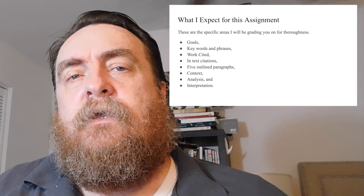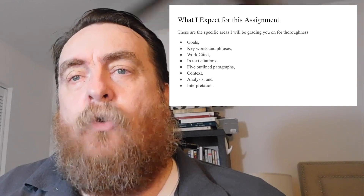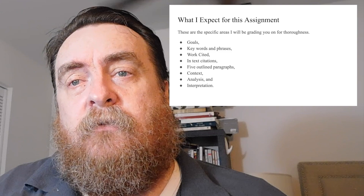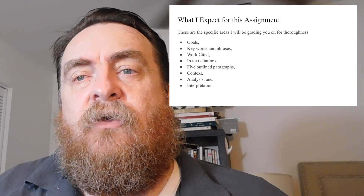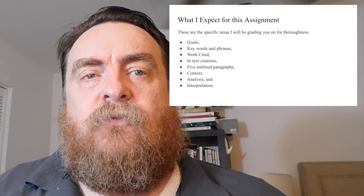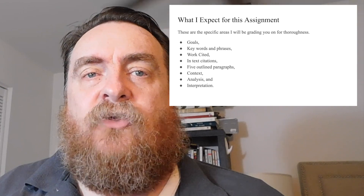This is just one example. You have to do five. And do you see how detailed mine is? It's easy to do the detail now that you have your double entry journal. These are the specific areas I will be grading you on in this assignment: goals, keywords and phrases, works cited, in-text citations, five outline paragraphs, context, analysis, and interpretation.